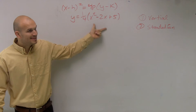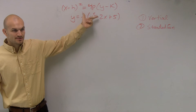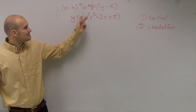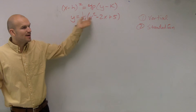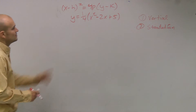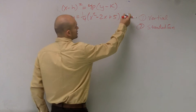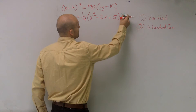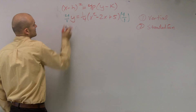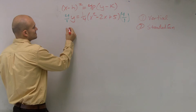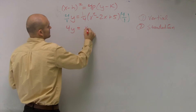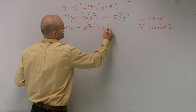We need to make this look like that standard form, so we've got to do a little transformation. The first thing I'm going to do is undo the multiplication by one-fourth, so I'm going to multiply by the reciprocal, which is 4. Then what I obtain is 4y equals x squared minus 2x plus 5.